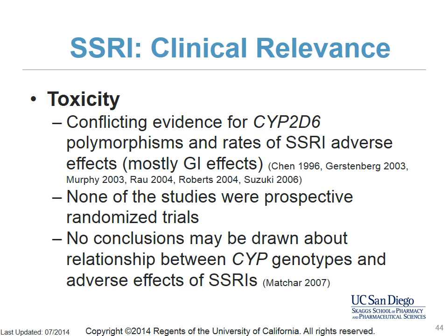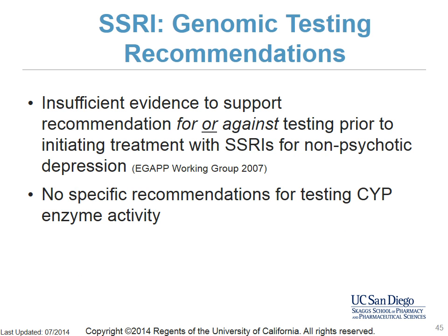Regarding toxicities, there is conflicting evidence linking CYP2D6 polymorphisms and rates of SSRI adverse effects, which were primarily gastrointestinal effects such as nausea and vomiting. None of the studies were prospective randomized trials, and no conclusions may be made about the relationship between cytochrome P450 genotypes and the adverse effects of SSRIs. In conclusion, there is insufficient evidence to support a recommendation for or against testing prior to initiating treatment with SSRIs for non-psychotic depression, and there are no specific recommendations for testing CYP enzyme activity.